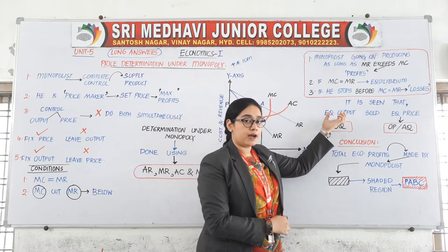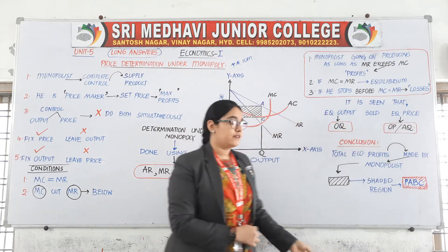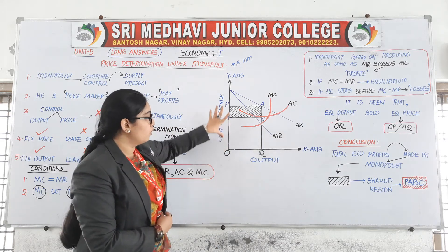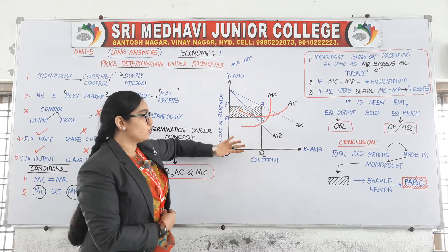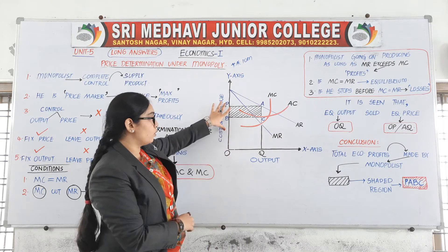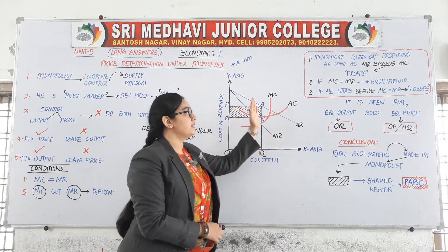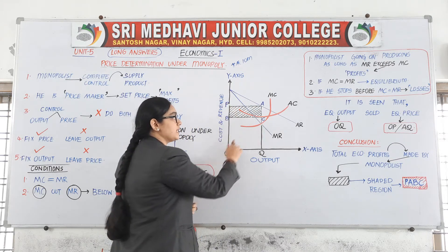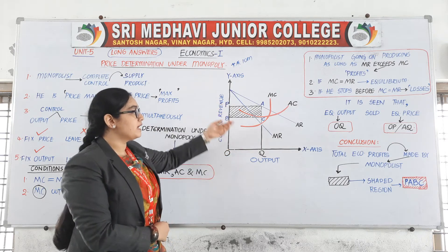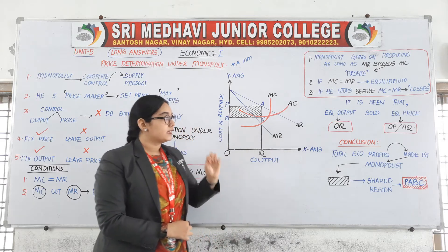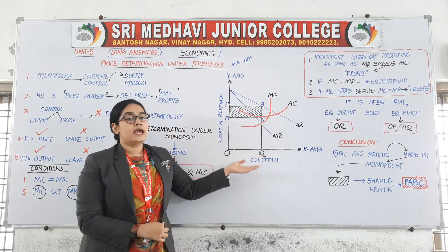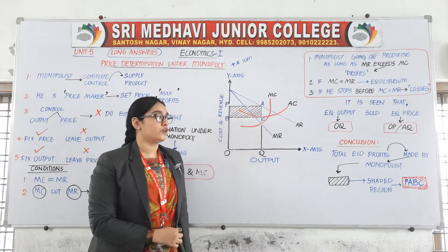It is seen that equilibrium output is sold at equilibrium price. OQ is the equilibrium output and OP is the equilibrium price. Also, OP equals AQ because OP and AQ are parallel and equal sides of the same rectangle. So I can say either OP price or AQ price — the meaning is one and the same. Therefore, a monopolist sells equilibrium output OQ at equilibrium price OP or AQ.